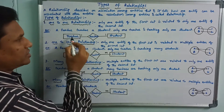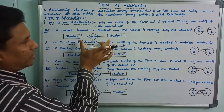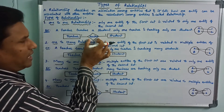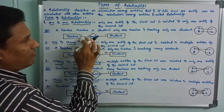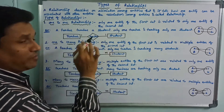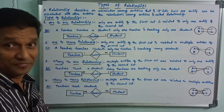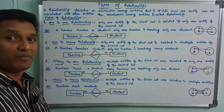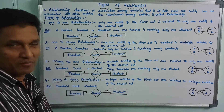Looking at the diagram: Teacher and Student — two entities. There is a relationship between them, and here it is a one-to-one relationship. One-to-one relationship shown clearly in the diagram.